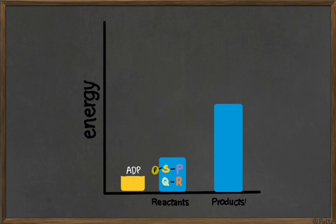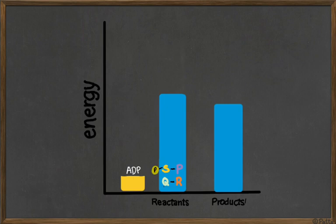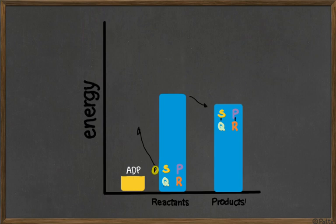This reaction on the left - in yellow - is exergonic, giving away energy. The energy is passed to the reactant, so now the reactant has more energy than before, and actually more energy than the product. Now the reaction can happen downhill. SP-phosphate-QR becomes an exergonic reaction. This energy breaks bonds, the phosphate goes away, SQ bonds with PR, and the phosphate is used again to make more ATP.